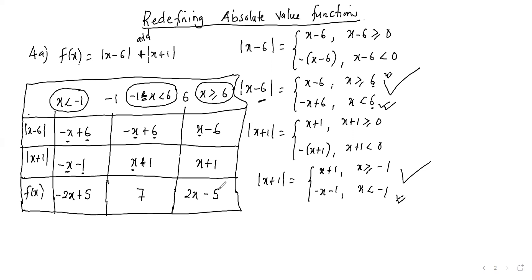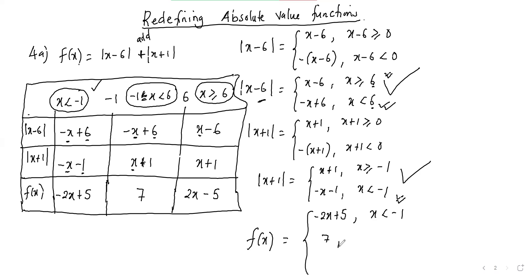Now that we have found f of x, we write it as a piecewise function: f of x equals negative 2x plus 5 for x less than negative 1; 7 for negative 1 less or equal to x less than 6; and 2x minus 5 for x greater or equal to 6.